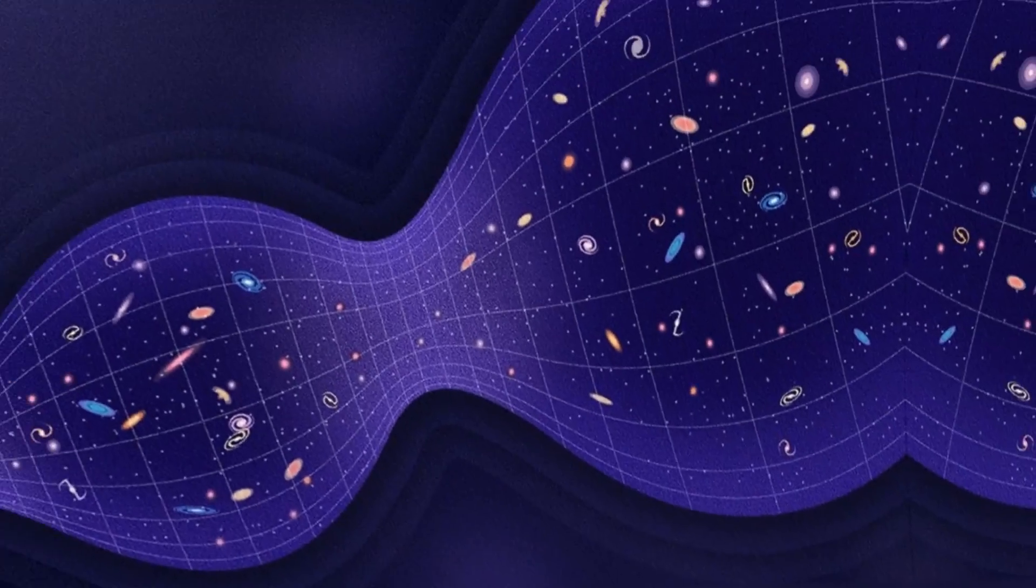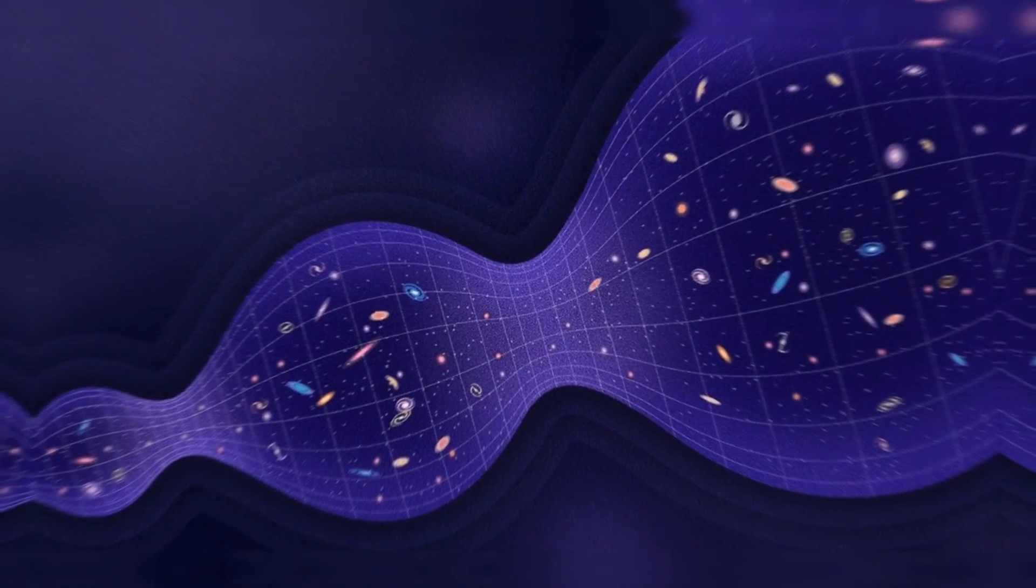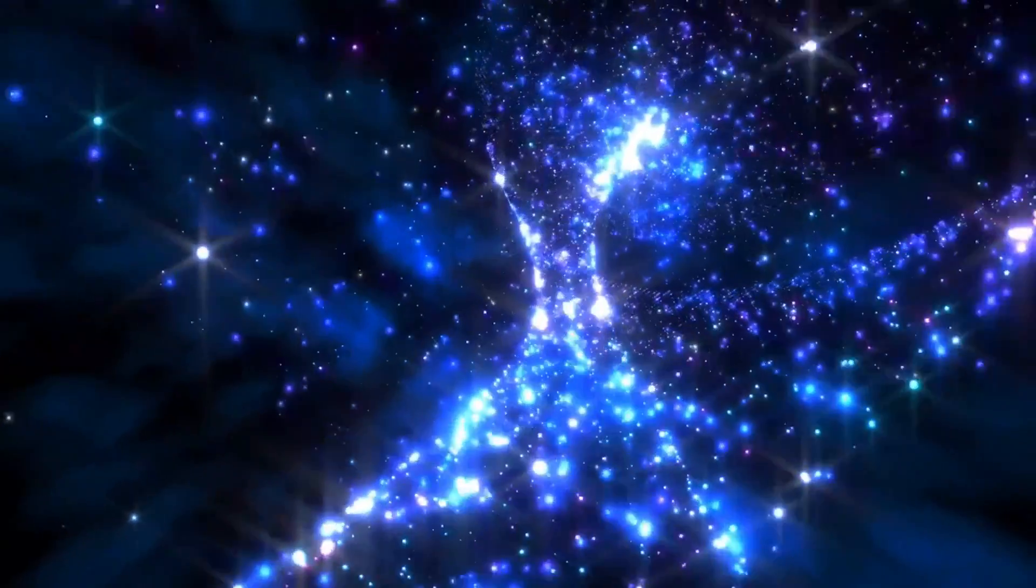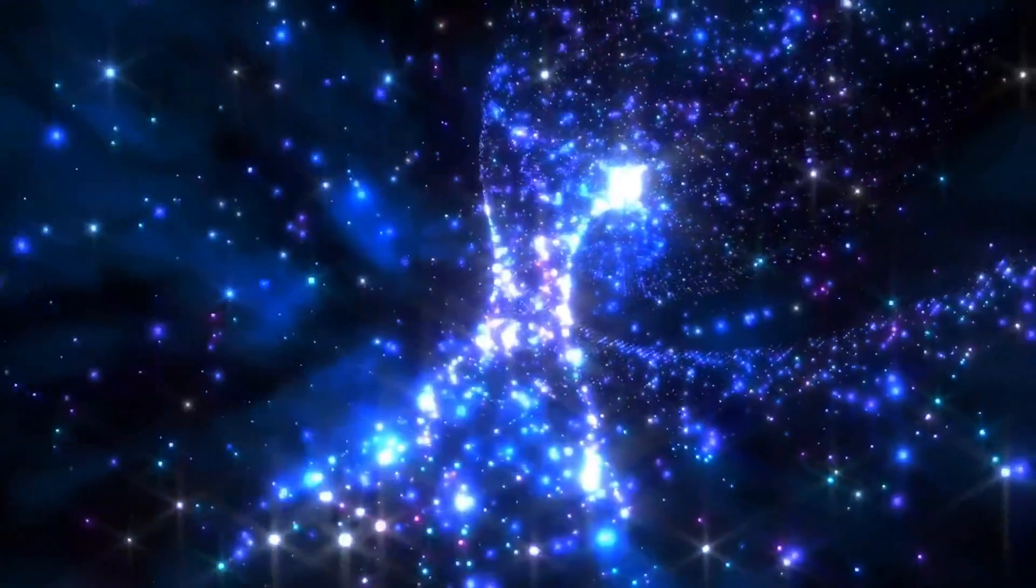To understand the ekpyrotic theory, we first need to grasp the basics of string theory. String theory proposes that everything in the universe is made up of tiny, vibrating strings. These strings can exist in multiple dimensions, not just the three spatial dimensions we experience.